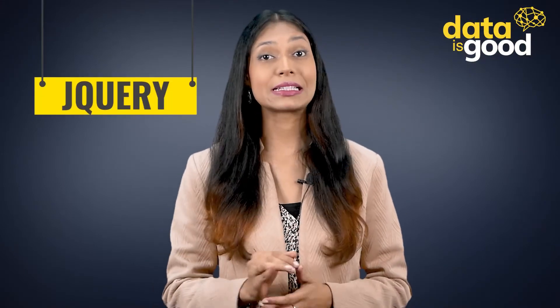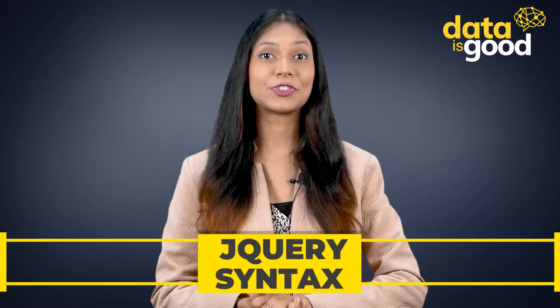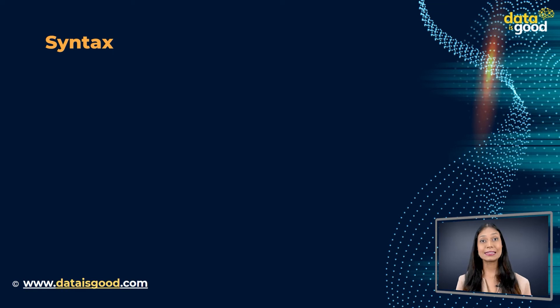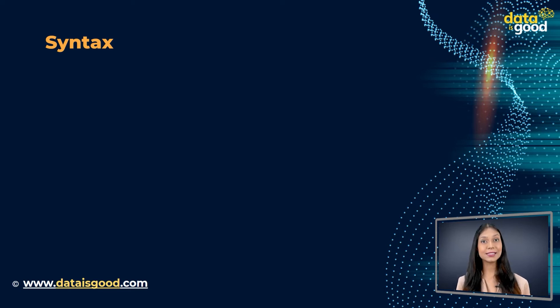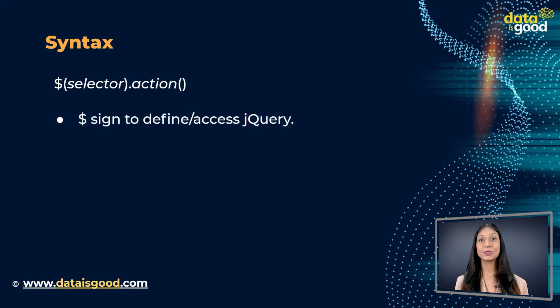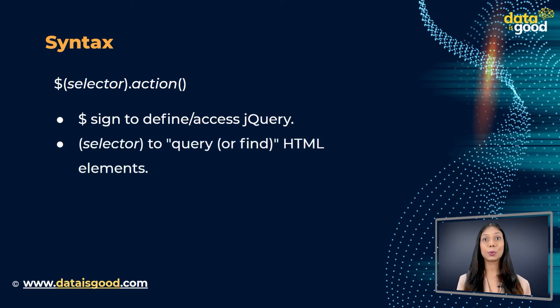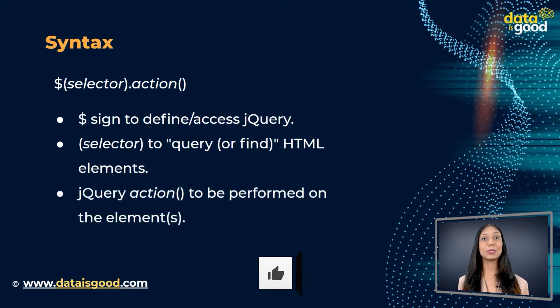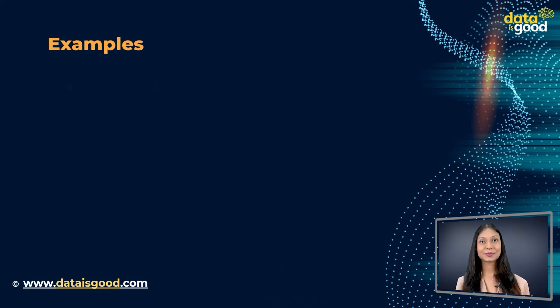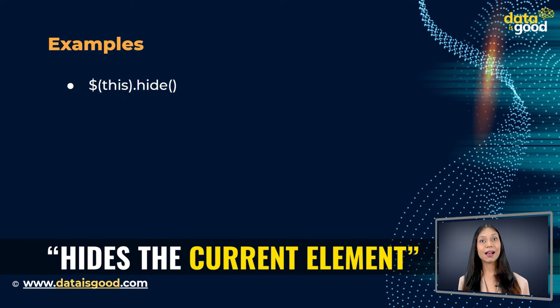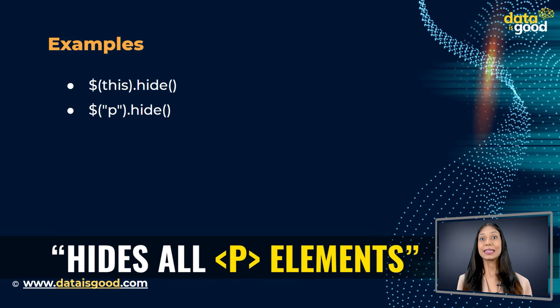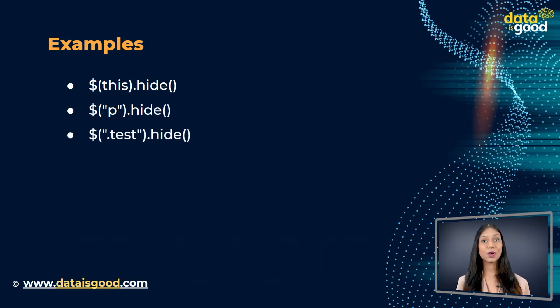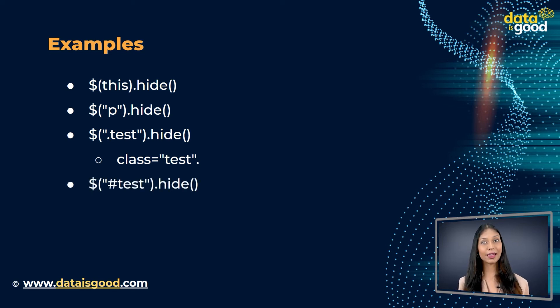In the last lecture we learned how to get started with jQuery, and now it's time to learn the syntax of jQuery. The jQuery syntax is tailor-made for selecting HTML elements and performing some actions on them. The basic syntax is: dollar sign, selector, dot, action. A dollar sign to define or access jQuery, a selector to query or find HTML elements, and a jQuery action to be performed on the elements. For example: $(this).hide() hides the current element; $('p').hide() hides all p elements; $('.test').hide() hides all elements with class equal to 'test'; and $('#test').hide() hides the element with id equal to 'test'.